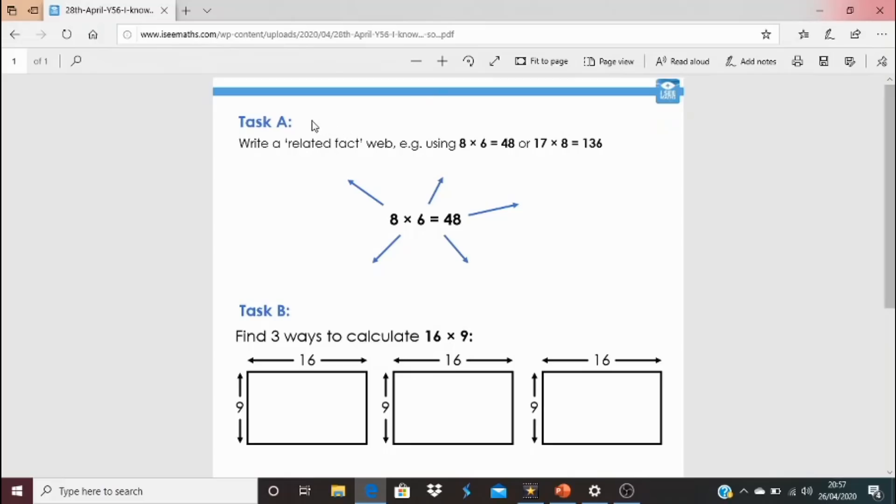So, you could have a go at task A. So, a related fact web, you might use 8 times 6 equals 48, or 17 times 8 equals 136, or another calculation. Which different related facts can you find? So, I know this, so I can work out that. I wonder how many different ways you can do that.